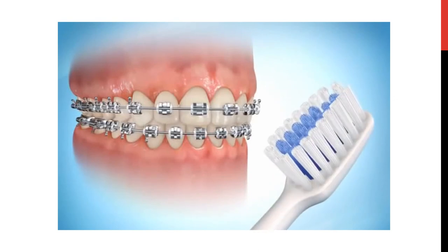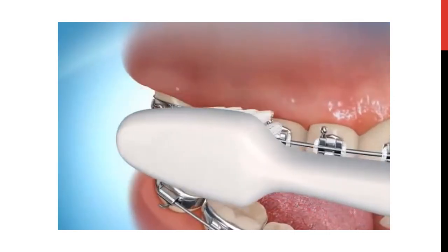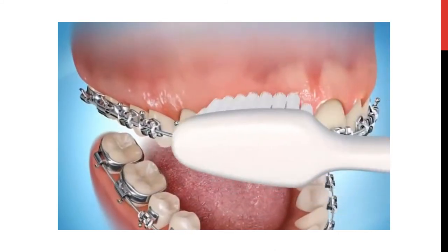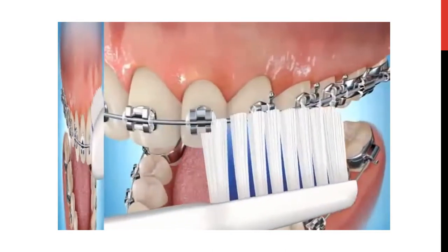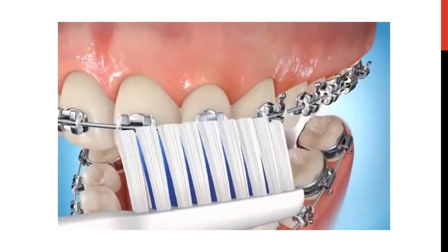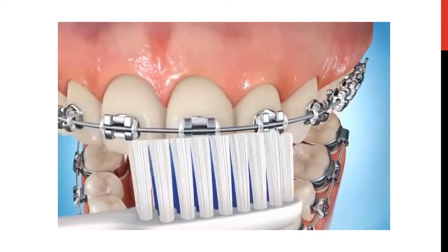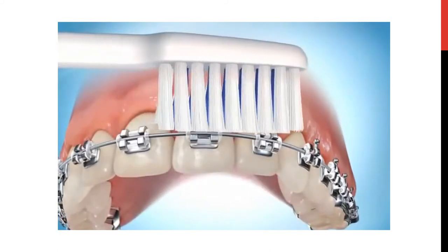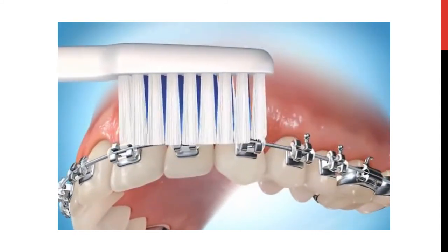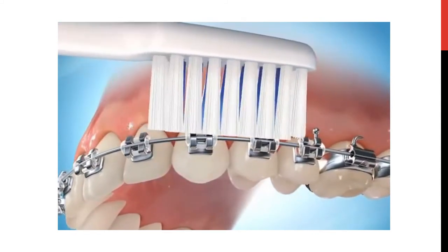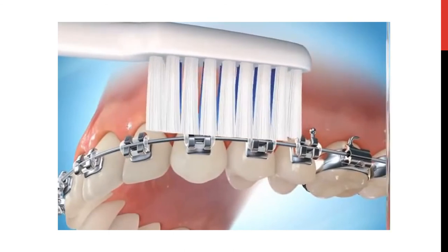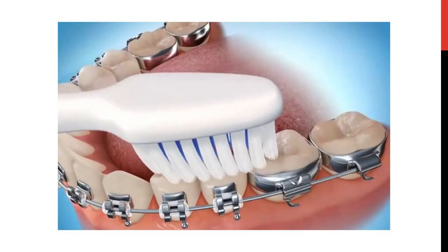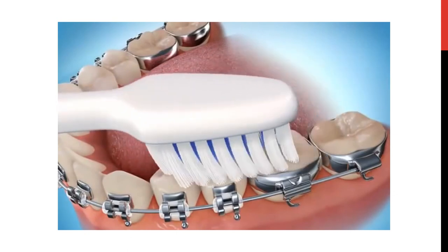This video demonstrates how brushing is done for a patient wearing a fixed orthodontic appliance. Circular motion is used to clean the appliance and the cervical region of the teeth. Then, at an angle of around 45 degrees, the appliance is cleaned from the incisal direction as well as from the gingival direction. The occlusal surfaces of the teeth are cleaned as well as the palatal or lingual surfaces.